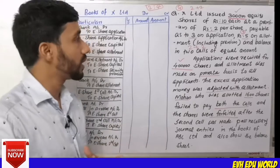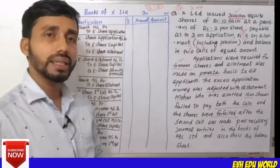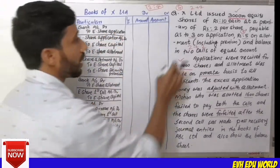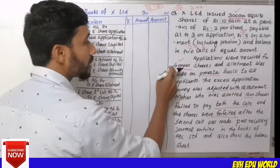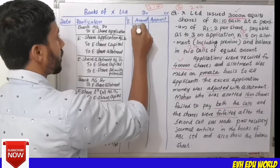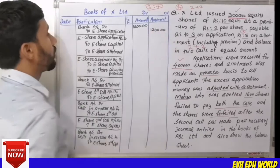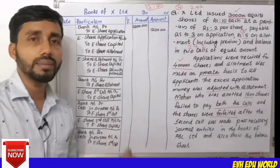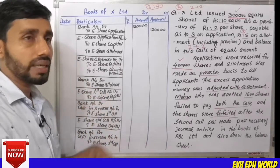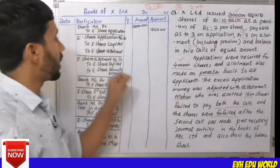First, we have to record the application received. The application money is Rs.3 per share. We debit the bank account. For 4 lakh shares applied, we record how much application money was received. If there is excess application money, you adjust it with the allotment.